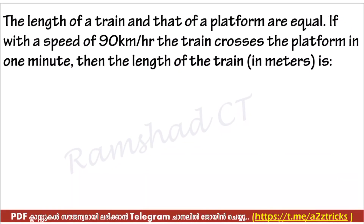The length of a train and that of a platform are equal. If with a speed of 90 km per hour the train crosses the platform in one minute, then find the length of the train in meters.